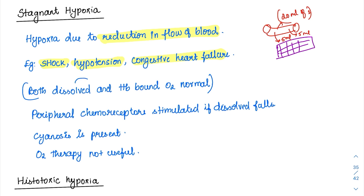Because dissolved oxygen is initially normal, peripheral chemoreceptors are not stimulated initially. However, in gross stagnant hypoxia with widespread stagnation, the dissolved form can eventually fall, stimulating chemoreceptors at a later stage. Cyanosis is usually present because oxygen is being extracted from the same blood, increasing deoxyhemoglobin — local cyanosis can appear at a site of local stagnation. Oxygen therapy is not of great benefit since the underlying problem is circulatory, not oxygenation.